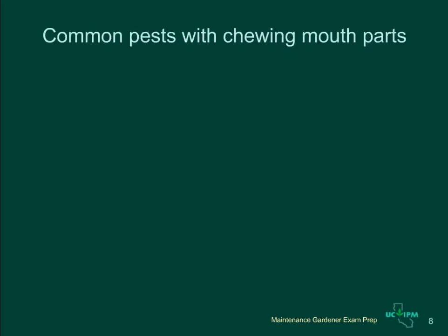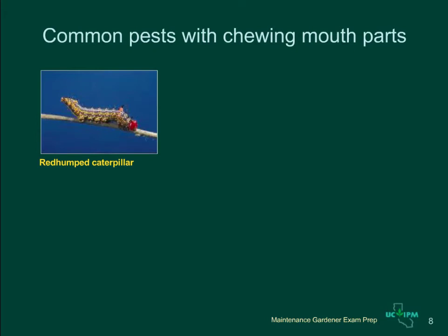Let's look at some common insect pests with chewing mouth parts that you should learn to recognize. Caterpillars are the larvae or immatures of butterflies and moths. They come in many colors and sizes and may attack any succulent part of the plant including leaves, buds, flowers, fruit, or roots.